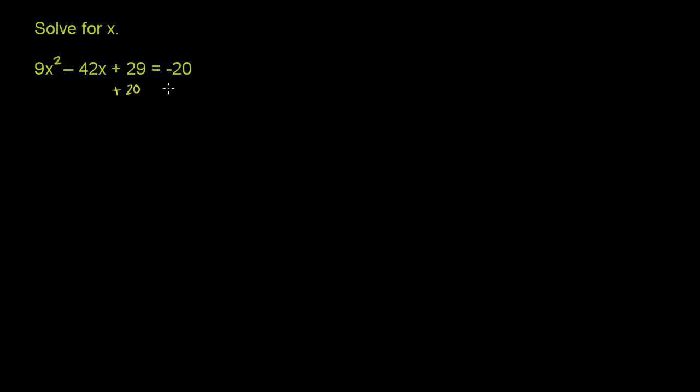If we add 20 to both sides, we're left with 9x² - 42x + 49 = 0.